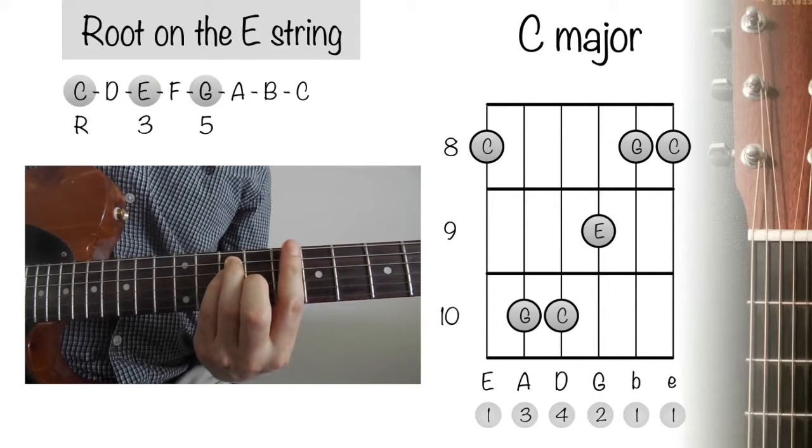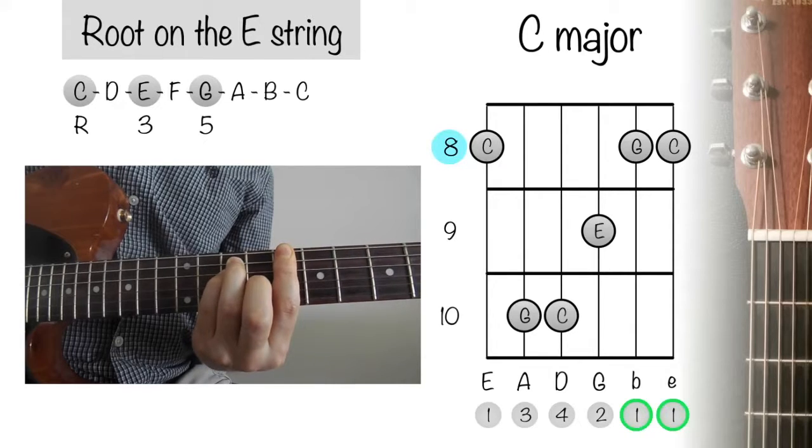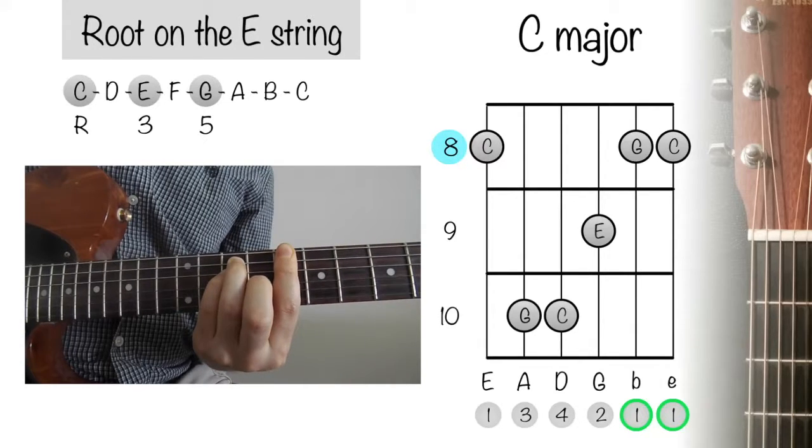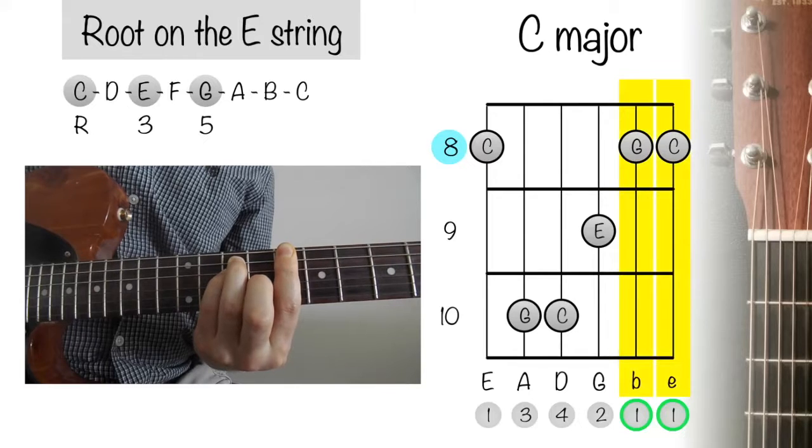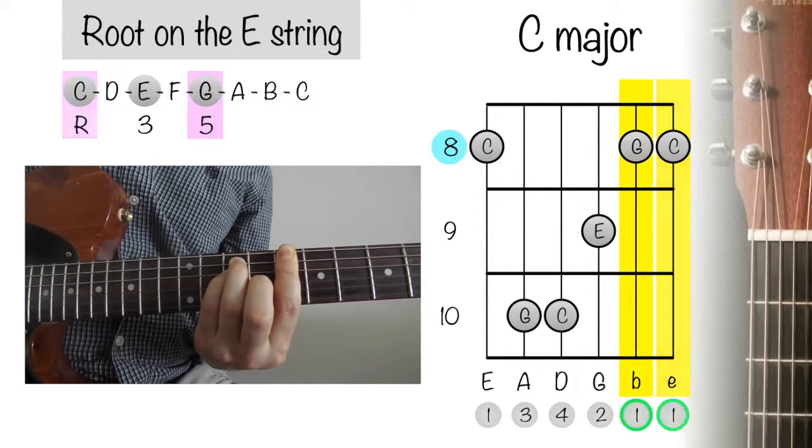Finally, if you wish to extend the chord even further, bar your index finger straight down the 8th fret so that the bottom of your finger is pressing against strings 2 and 1. This will add an additional G and C.